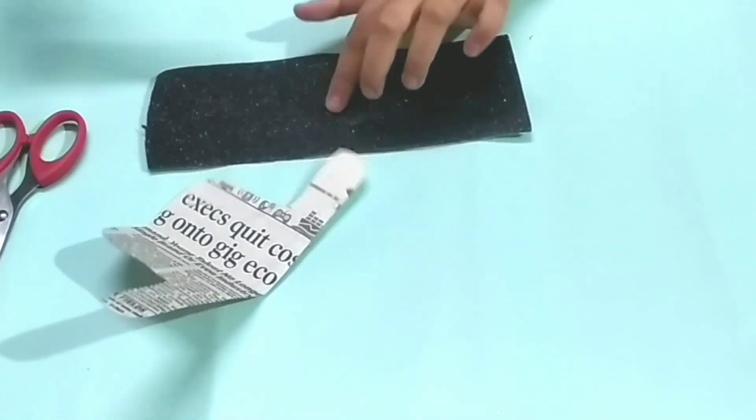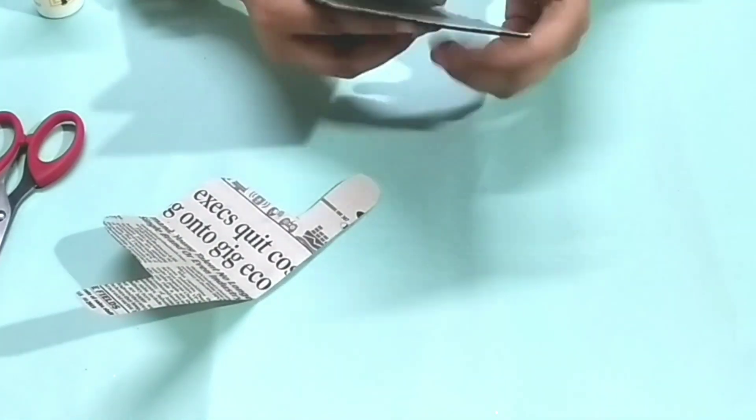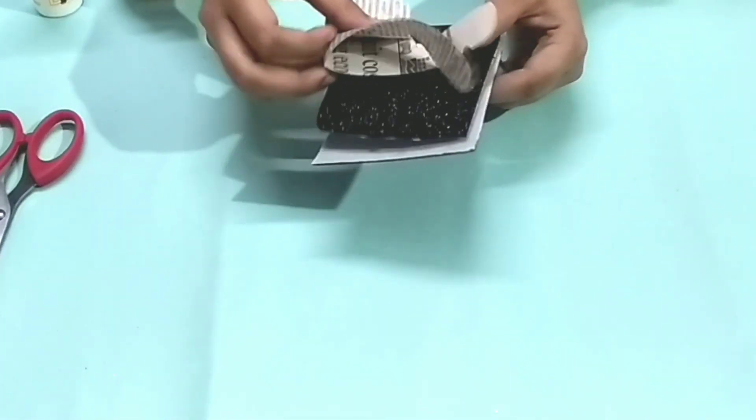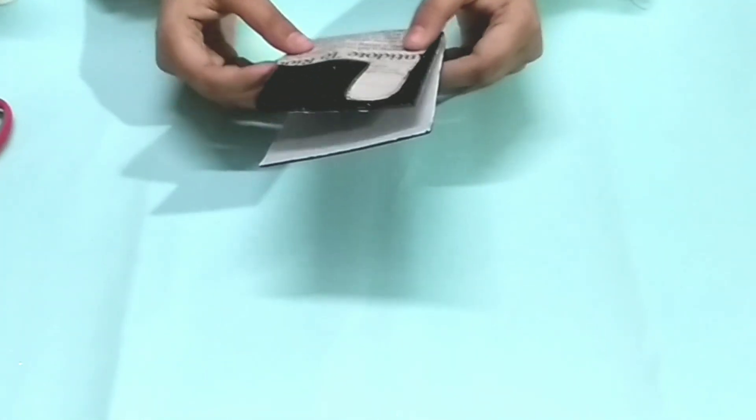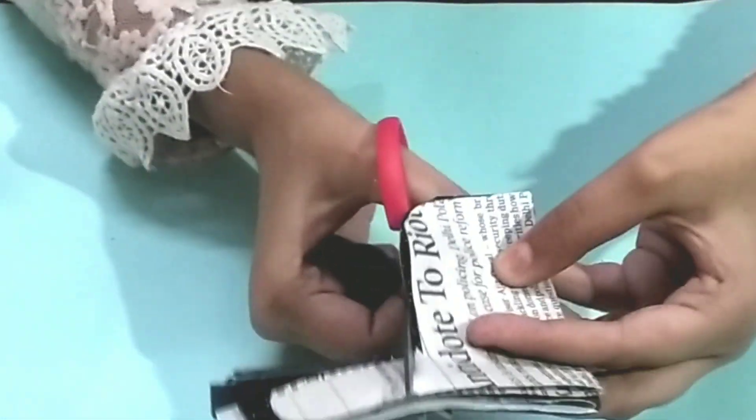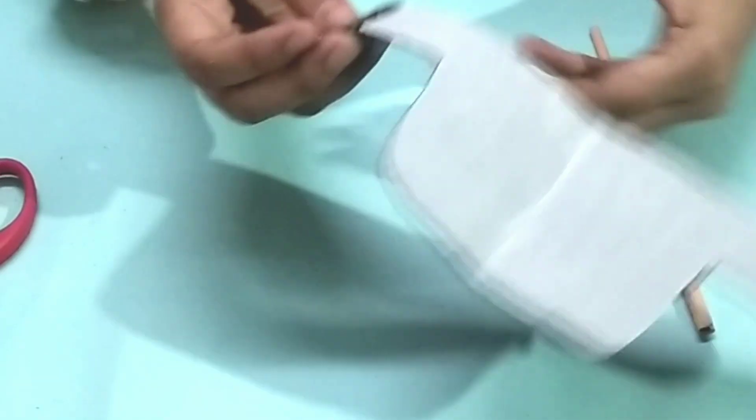Now let's make the second one. Then do the same thing we did in the first one. You have to just cut it according to the cutout, then paste it.